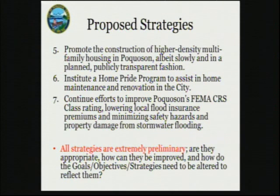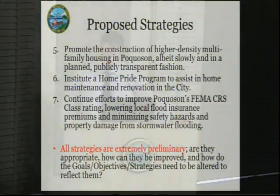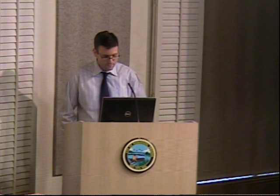Strategy seven is to continue efforts to improve Pocosin's FEMA CRS rating, lowering local flood insurance premiums and minimizing safety hazards and property damage from flooding. This is a continuation of strategies we've been pursuing over the past several years to get our CRS rating up, get flood insurance premiums down, and promote floodplain management and awareness in the city. These are all extremely preliminary, and I would ask you to discuss among yourselves whether they are appropriate, how they can be improved, and how the goals, objectives, and strategies section needs to be altered.